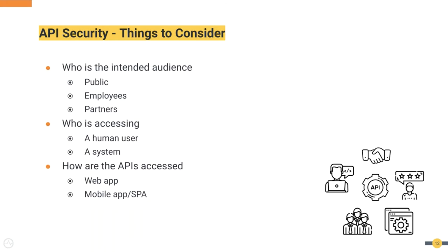The audience could also include employees, meaning that APIs are exposed internal to your network. And it could also be partners — basically trusted parties which can access these APIs. It's important to identify the intended audience for your APIs.